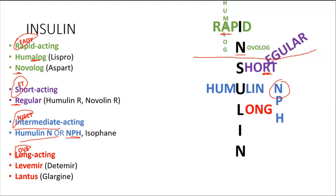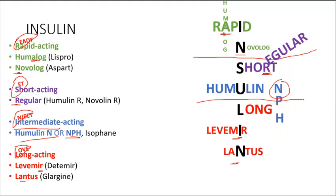We already placed Humulin N and NPH in the middle of INSULIN for intermediate acting. Now for long acting — Levemir and Lantus — I can see I and N letters in the remaining parts. I use those to form Levemir, and the N to form Lantus. Those below are my long acting. So we have short acting, intermediate acting, and rapid acting all mapped out.